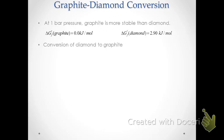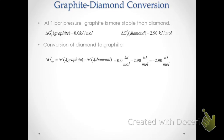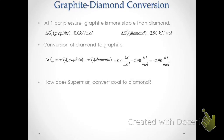If we calculate delta G for the conversion of diamond to graphite, we take the difference between the two Gibbs energies of formation and find it equals negative 2.90 kilojoules per mole. That being negative means that the conversion of diamond to graphite is spontaneous — delta G less than zero means a spontaneous process under standard conditions at one bar pressure. How can we convert graphite to diamond, and why does diamond even exist if graphite is the most stable form at one bar pressure? This involves a change of pressure.